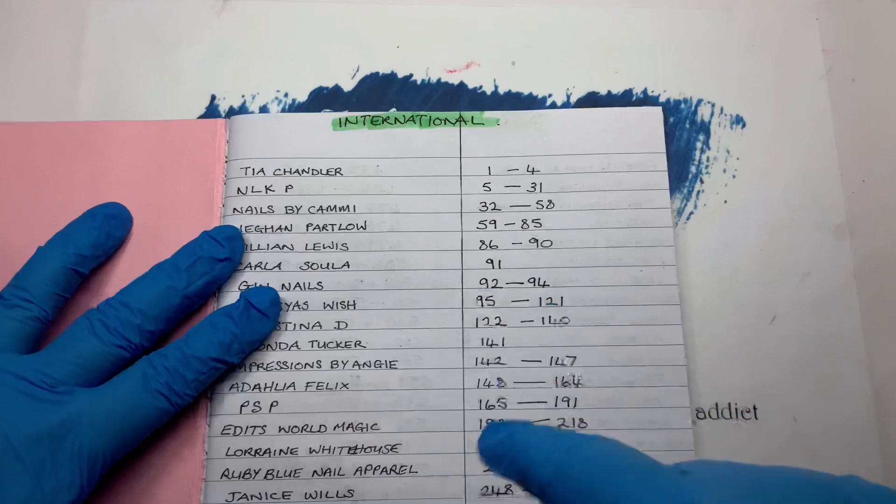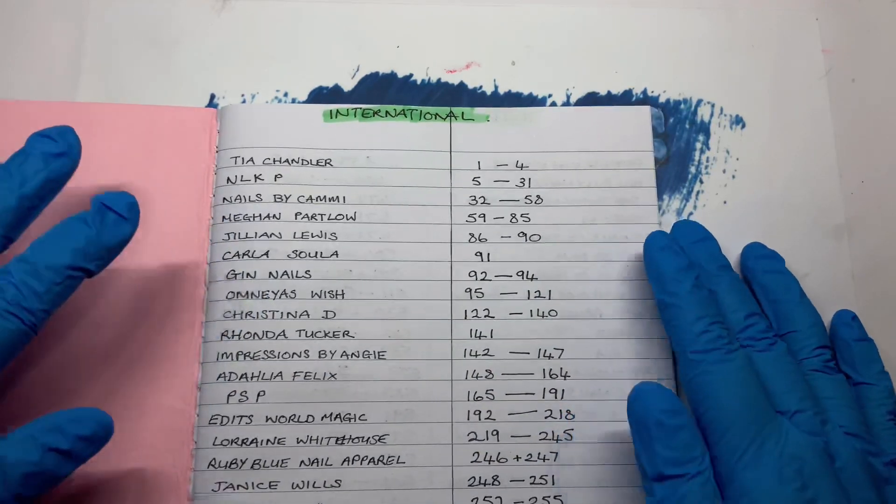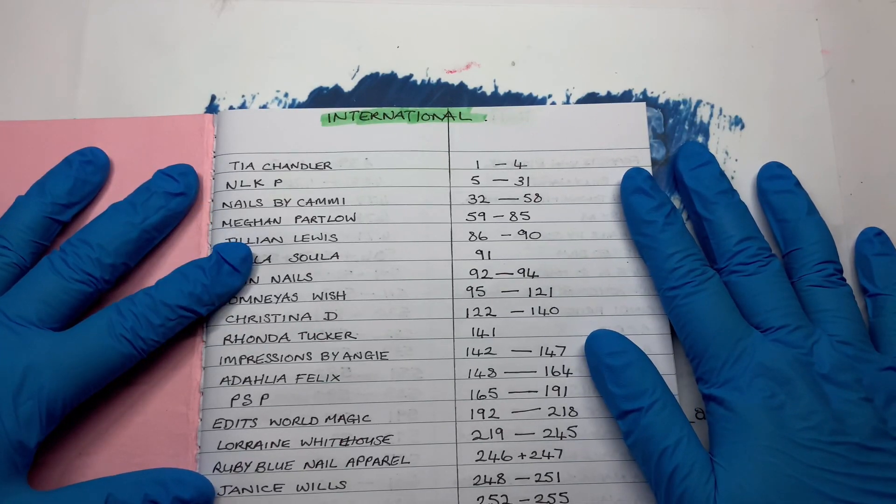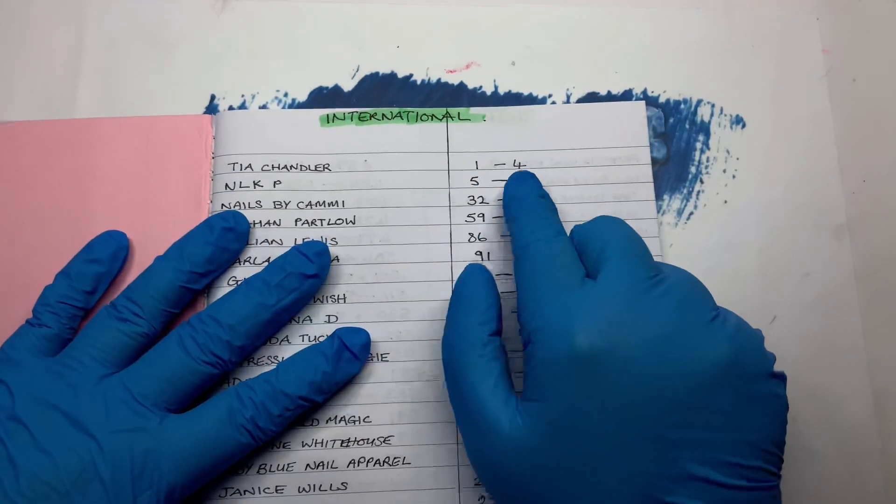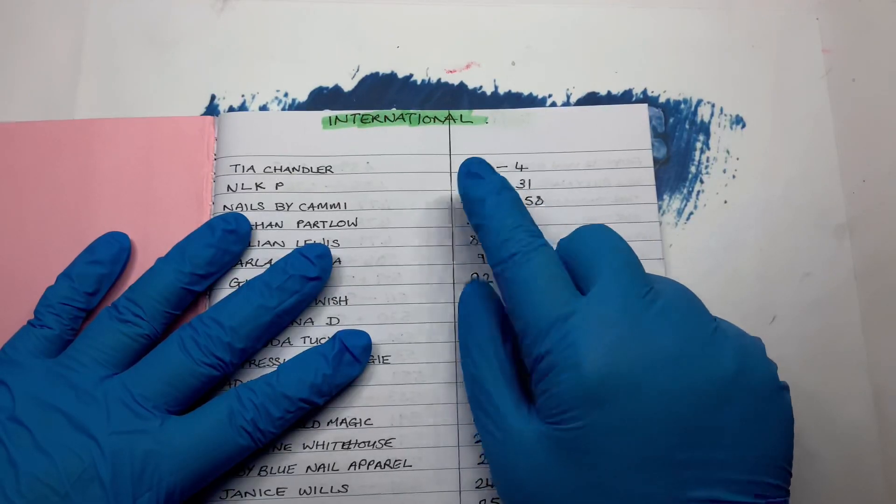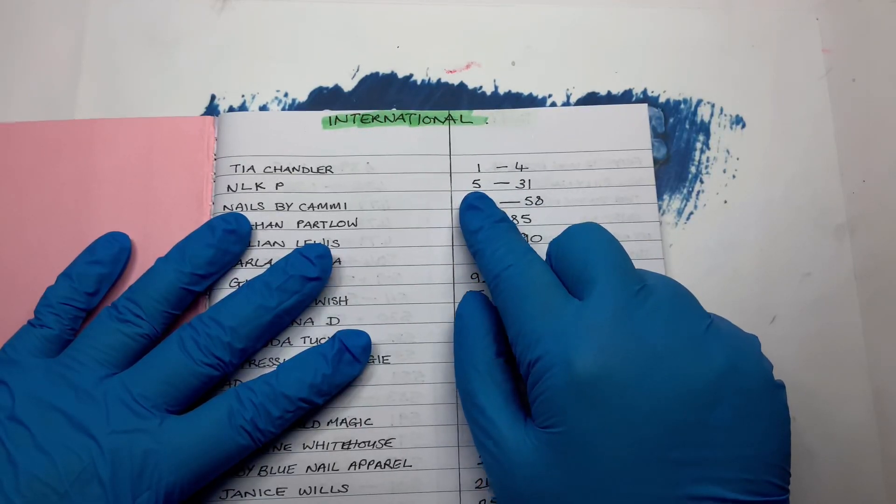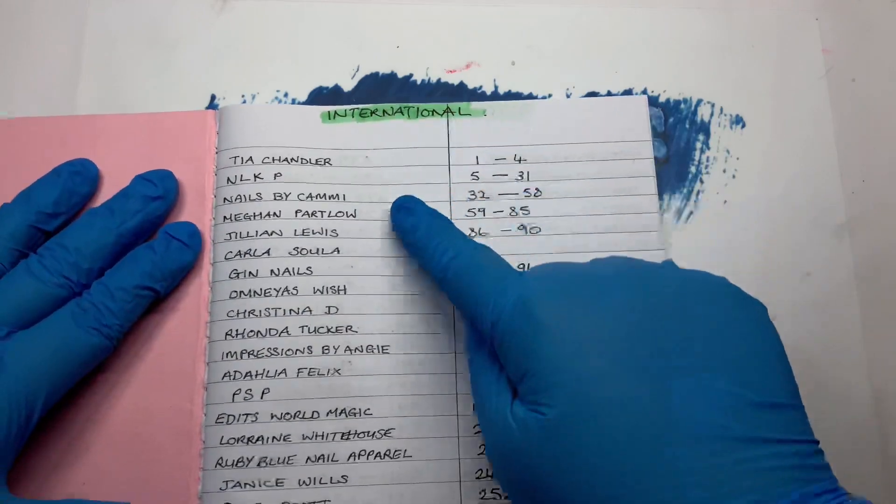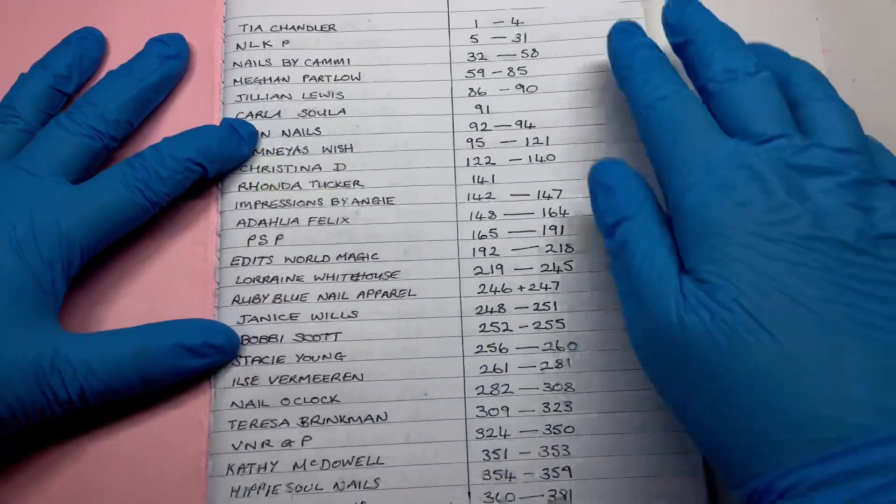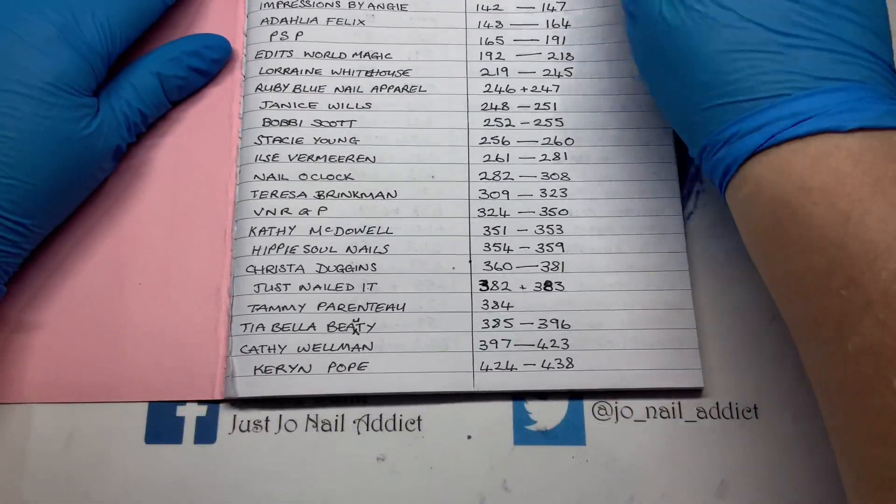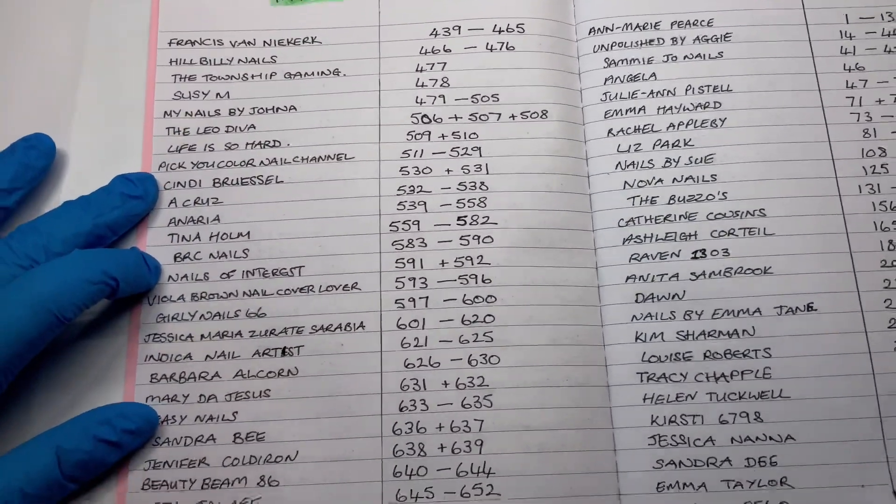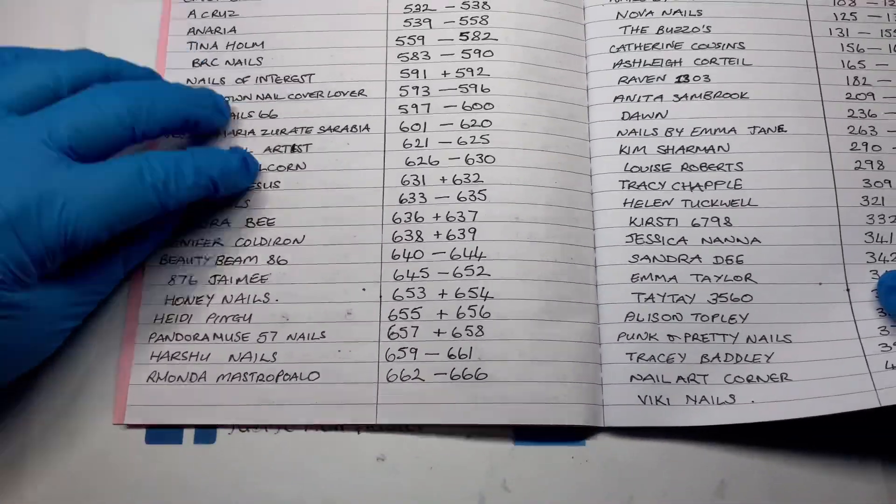I'm going to show you what we've done. We've got international people. If you've got say four entries, I've written you down one to four. Then the next person carries on with however many entries they've put in. So NLKP has got five to thirty-one and so on, all the way down. That is all international people.